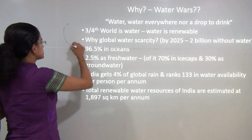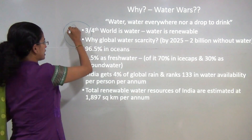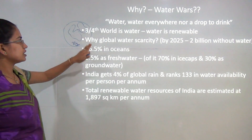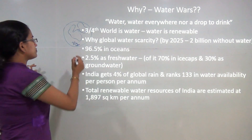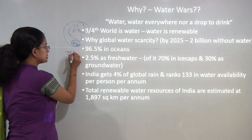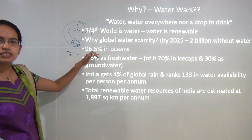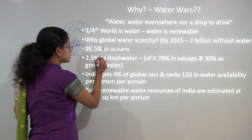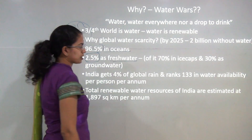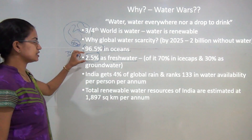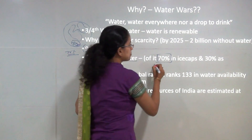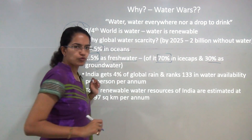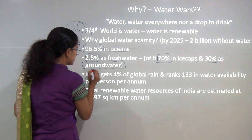Looking at the world scenario, one-fourth is land and the remaining three-fourths is water. However, this water is a renewable source. Of that 75 percent water present, 96.5 percent lies within ocean bodies, and nearly 2.5 percent occurs as fresh water. Of this 2.5 percent, nearly 70 percent is trapped as ice caps in polar areas, and only 30 percent occurs as ground water — the water we are actually able to use.